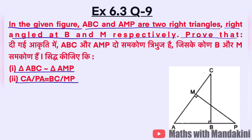So here we have two right-angled triangles. The right angles are at B and M, both are 90 degrees. Now let's take the first part, where we have two triangles ABC and AMP, and we need to prove they are similar.